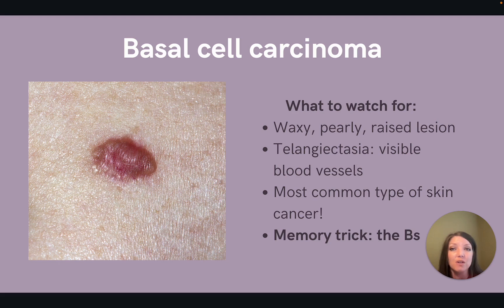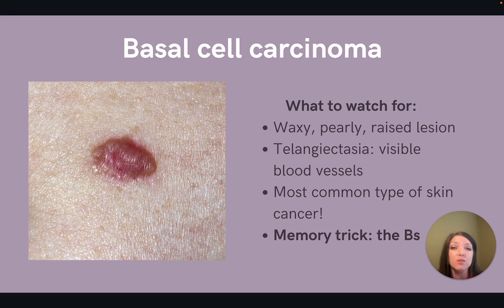With a basal cell carcinoma lesion, we can also see those visible blood vessels, and this is called telangiectasia. It can be hard to differentiate the different types of skin cancer, but one thing that helps is to think of all the Bs. I think of the B in basal cell carcinoma — bump or raised, blood vessels — and I also think of the word big because this is the biggest or most common type of skin cancer.